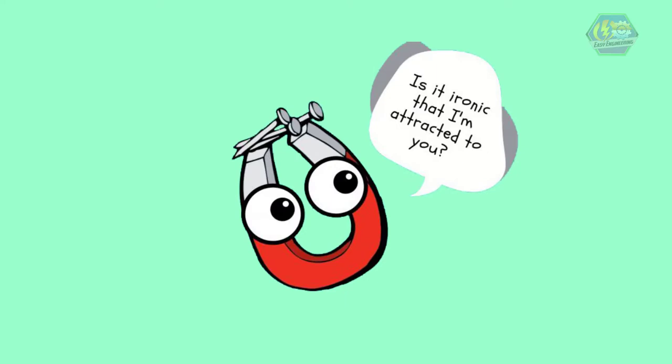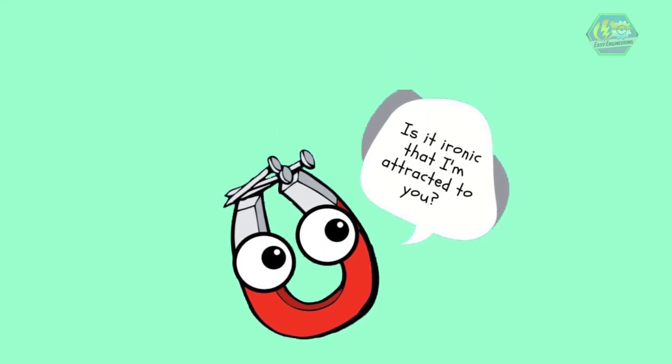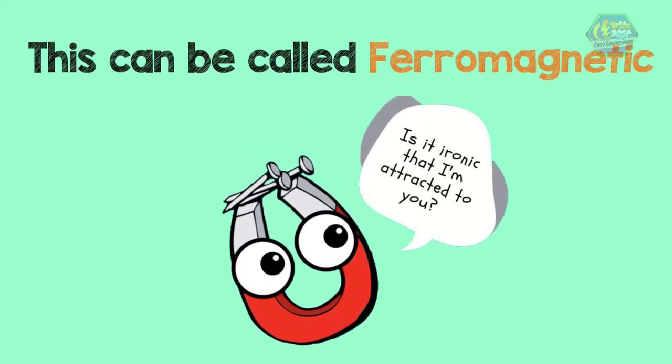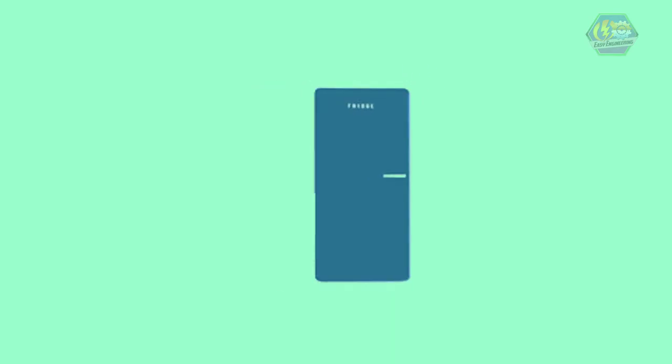Materials that contain iron can be magnets. This can be called ferromagnetic. These metals are attracted to magnets even though they aren't magnets themselves, like the metal in your refrigerator door.